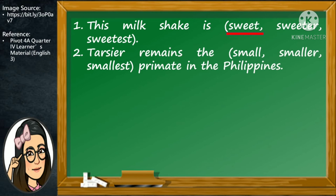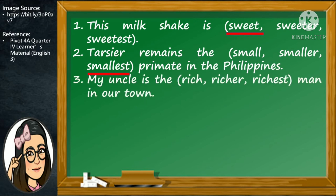Number two: Tarsier remains the blank primate in the Philippines. Is it small, smaller, or smallest? Good job! The correct answer is smallest. Tarsier remains the smallest primate in the Philippines. Number three: My uncle is the blank man in our town. Is it rich, richer, or richest? Very good! The correct answer is richest. My uncle is the richest man in our town.